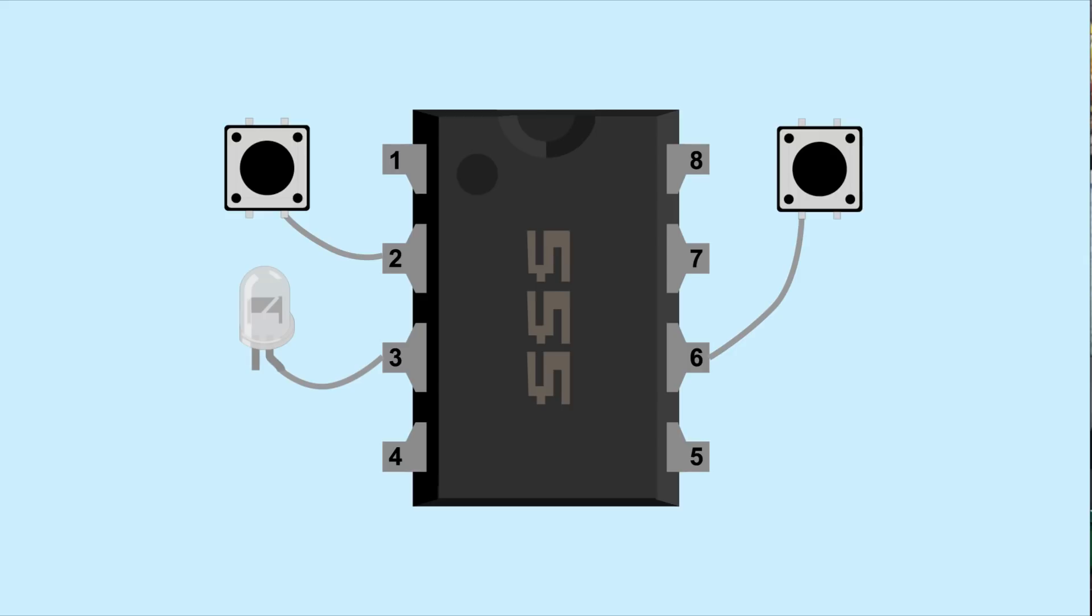So let's say we have two buttons connected to the 555. Hitting the first button, the 555 outputs high. Hitting the second button, the 555 outputs low. Let's take a closer look at the 555 to understand how that works.